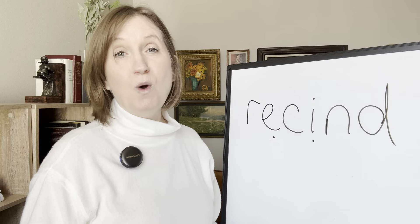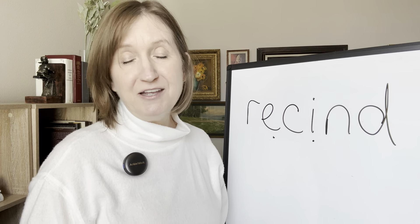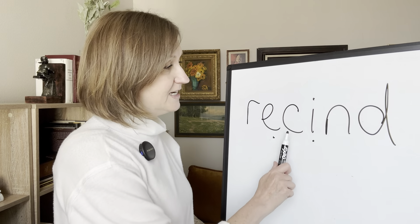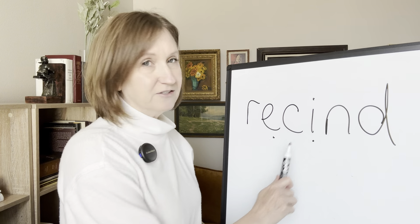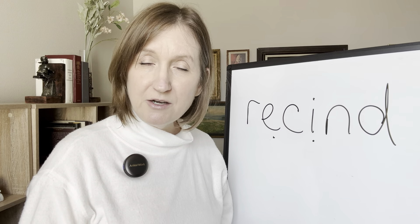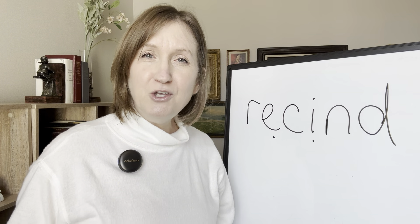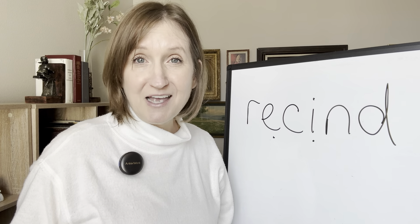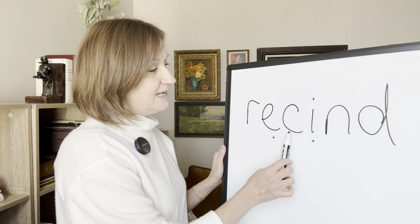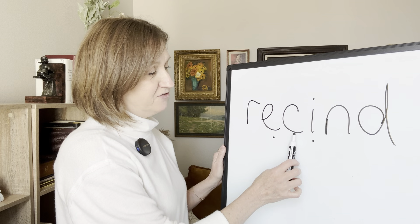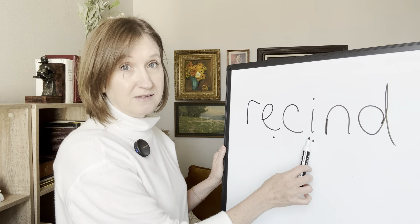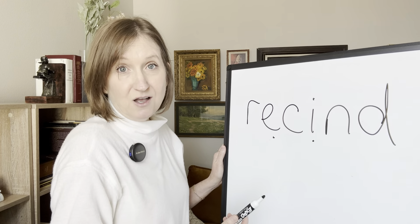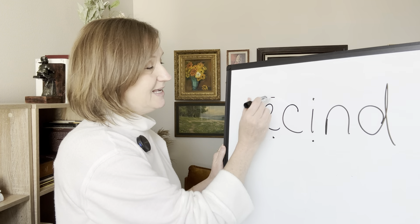Now we have to determine what sound they're each going to make. We do that by what I call the tap two rule, which is when you look at the next two letters. If one of those next two letters is another vowel, then the vowel that you are on will probably say its name or make its long sound. Looking at this e — yes, there is a vowel in the next one or two spots, so that e is going to say its name or make its long sound. It's going to say ee.